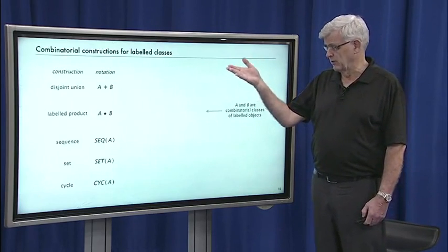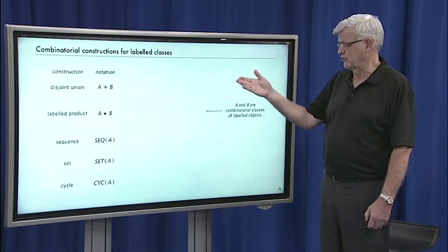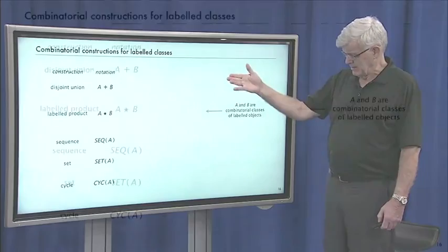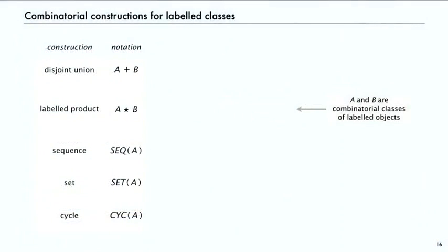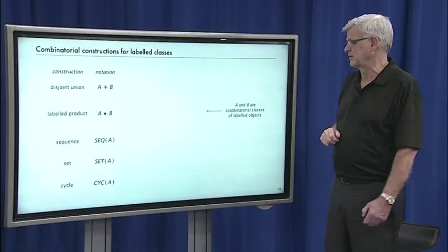We're going to use a disjoint union operation and the labeled product operation. Then we can build up a class by taking a sequence of objects from another class, or a set, or a cycle of objects. Those correspond to the permutations, urns, and cycles of basic objects that I talked about as basic examples.